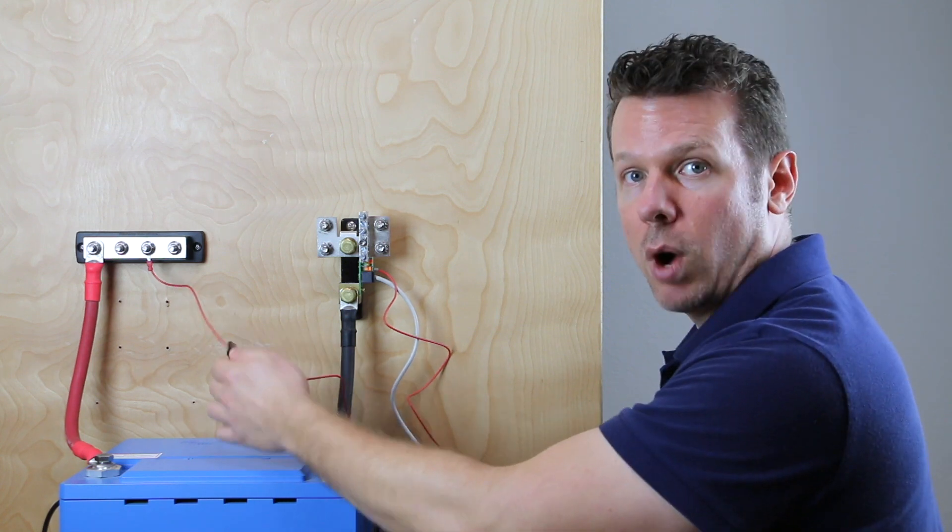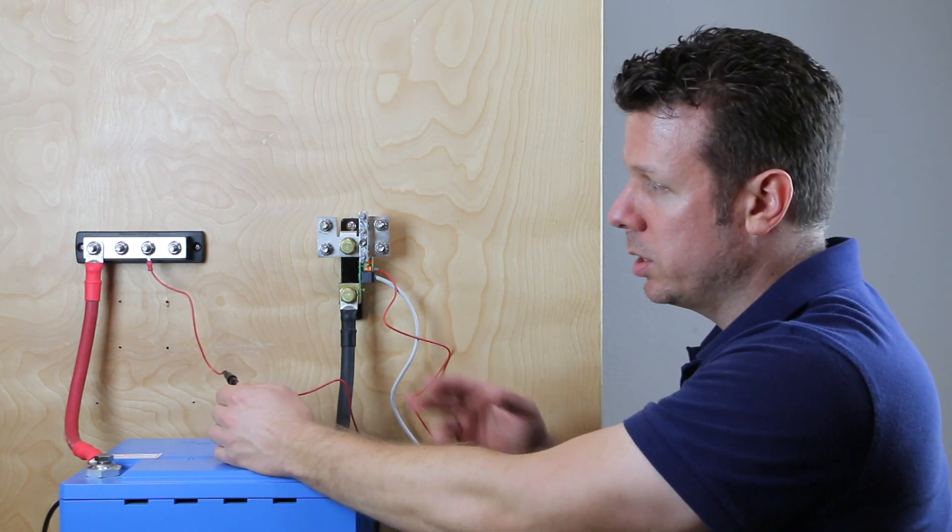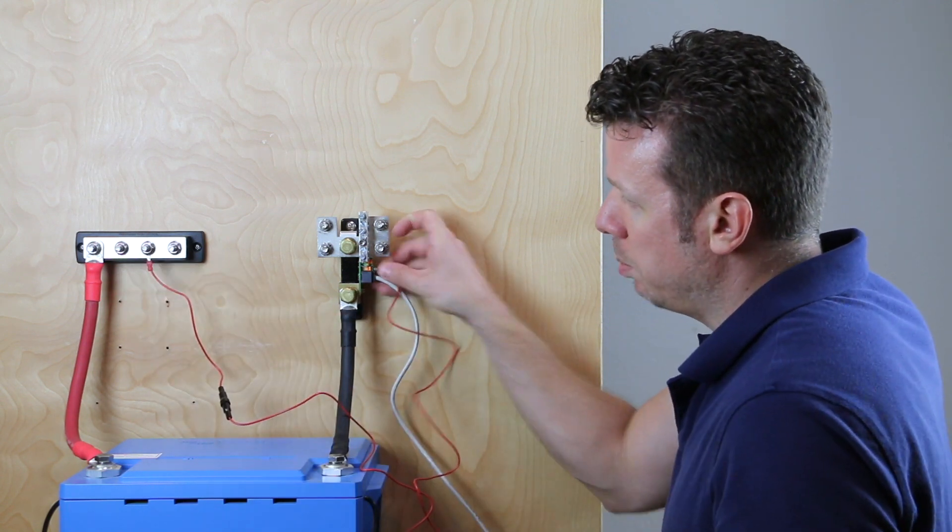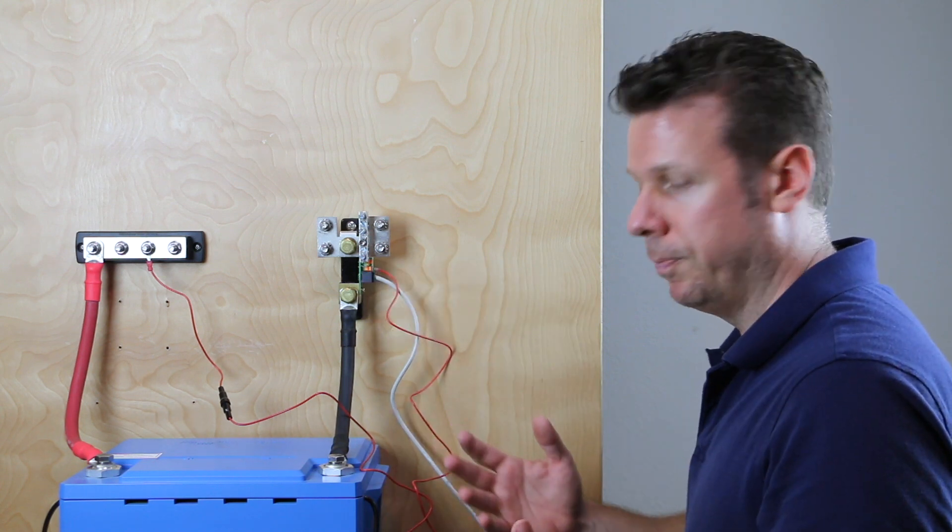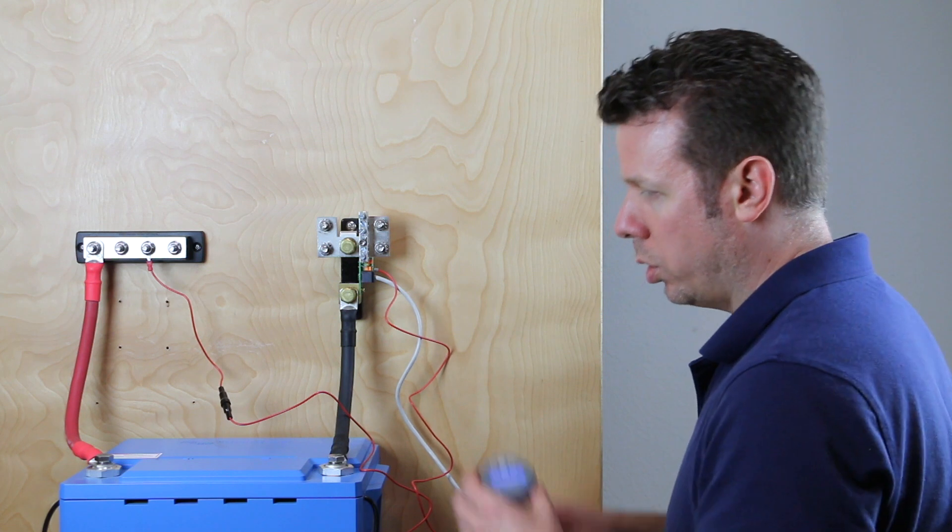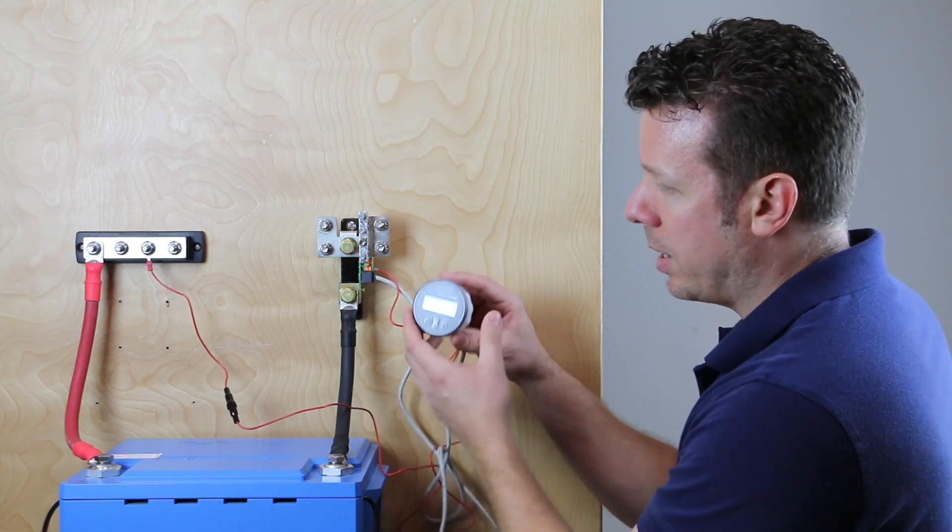So you can see I've got a little positive wire. This comes with the battery monitor. It's got a little inline fuse connected to positive and then it runs over here and I plugged it into the B1 terminal. And then we've connected our RJ12 cord and I've connected that to the back of the display.